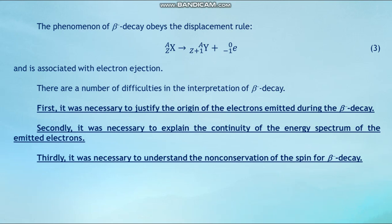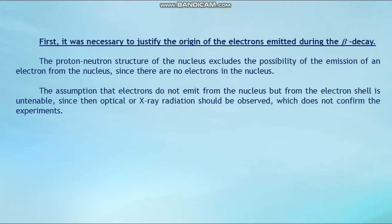There are a number of difficulties in the interpretation of beta minus decay. First, it was necessary to justify the origin of the electron emitted during beta minus decay. Second, it was necessary to explain the continuity of the energy spectrum of the emitted electrons. Third, it was necessary to understand the non-conservation of spin during beta minus decay.